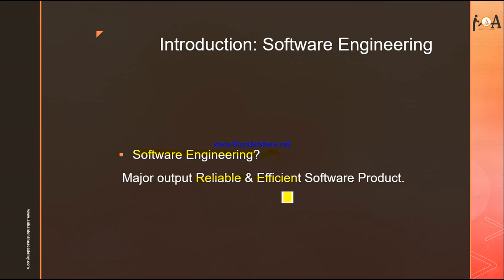So software engineering is basically a process whose major output is a reliable and efficient product. Operating procedures consist of instructions to set up and install the software — several files consisting of operating system files that tell you how to install and work on that software. After that, maintaining the software should also be there. All these terminologies are covered under software engineering.